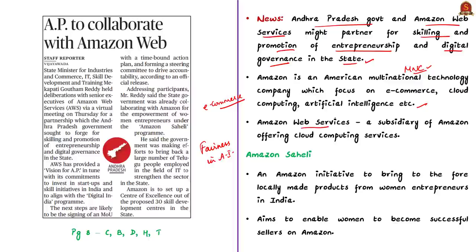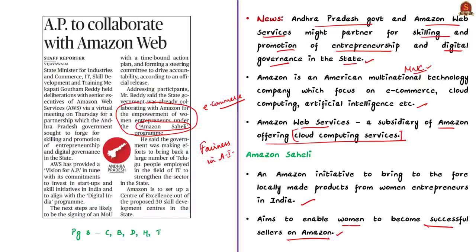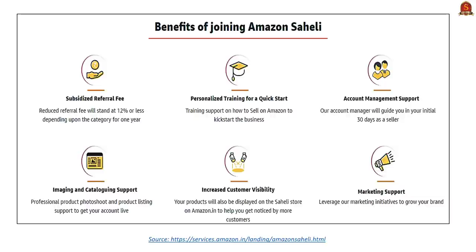Amazon Web Services is a subsidiary of Amazon offering cloud computing services. The Andhra Pradesh government is already collaborating with Amazon for the empowerment of women entrepreneurs under a program called Amazon Saheli. This is an initiative of Amazon to popularize locally made products from women entrepreneurs in India and to enable women to become successful sellers on Amazon. The word 'Saheli' in Hindi means a female friend — Amazon acts as a friend to women by enabling them to become successful online entrepreneurs.